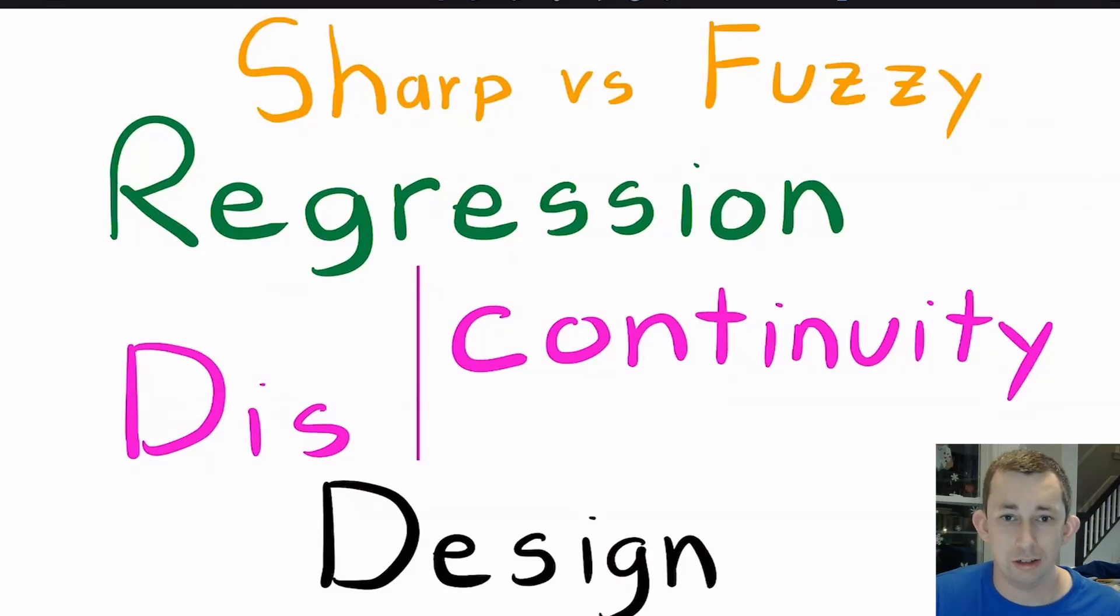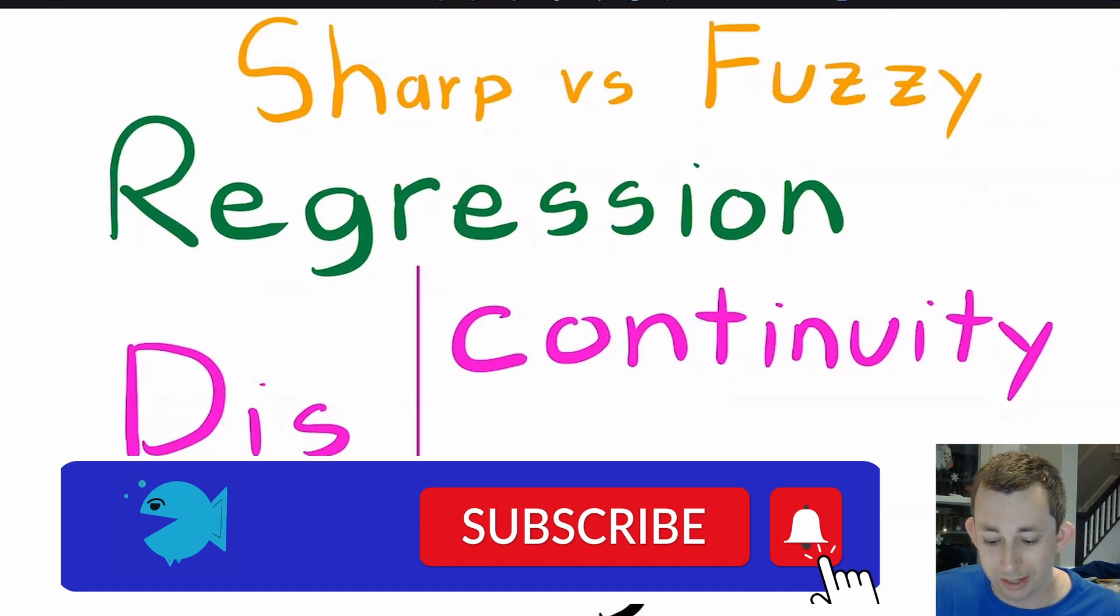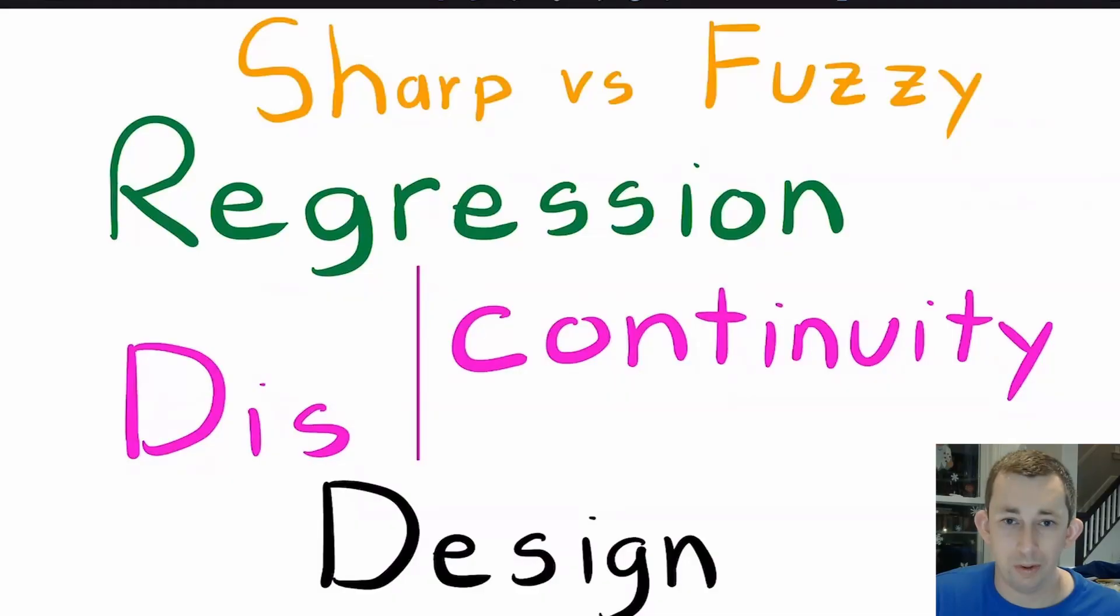Hi guys, welcome back to In Case of Econ Struggles. Welcome to another causal inference struggle. Today we're going to really quickly go over the difference between sharp and fuzzy regression discontinuity designs. We'll do a quick review of an RDD and then we'll jump right into helping you figure out the difference between sharp and fuzzy RDDs. Timestamps are below if you would like to jump around, but let's go ahead and get right into it.